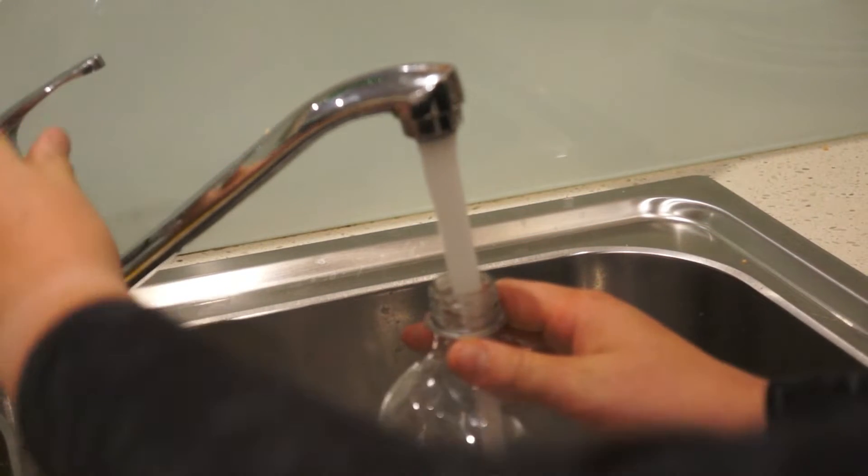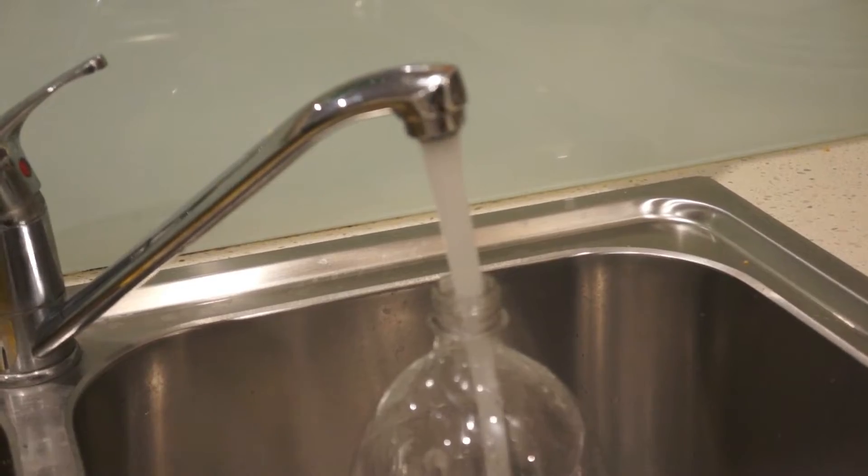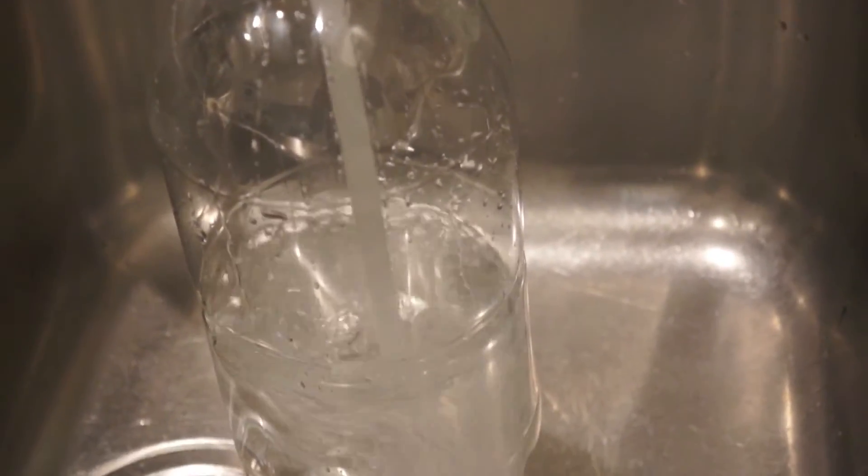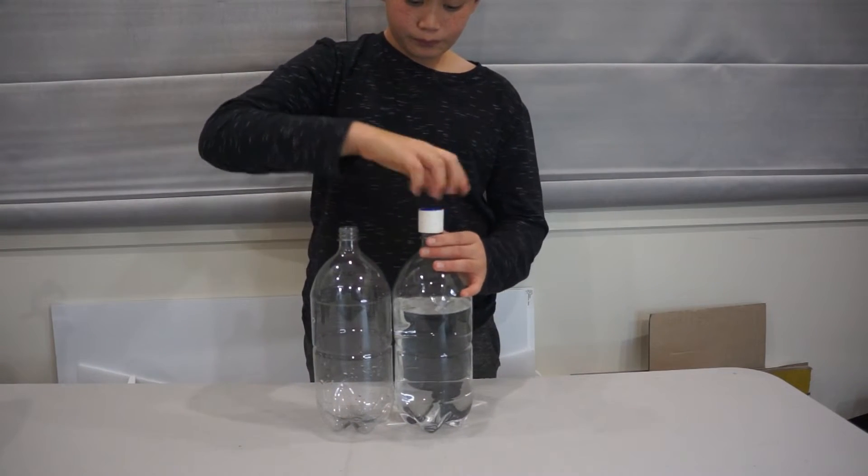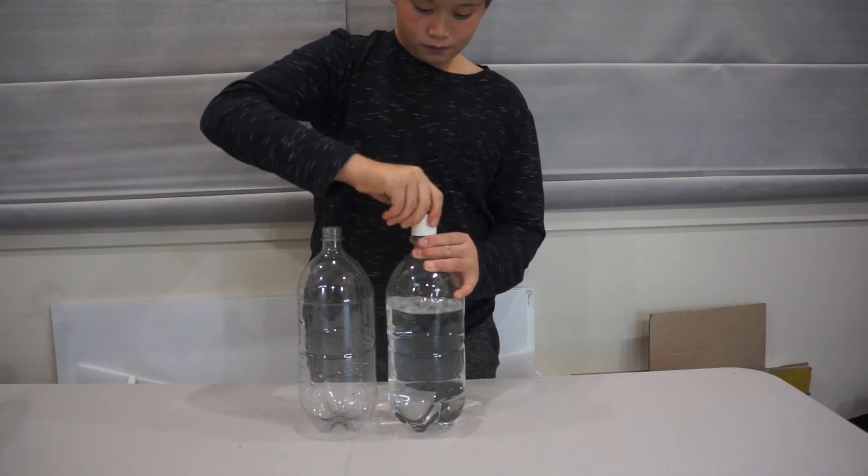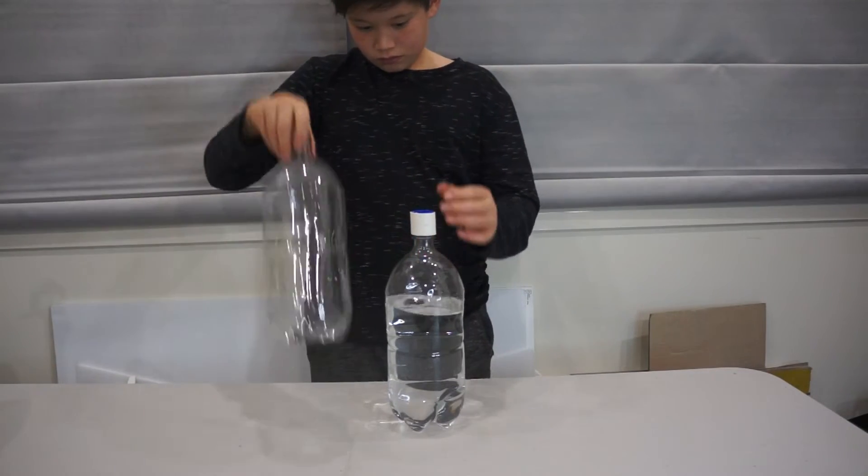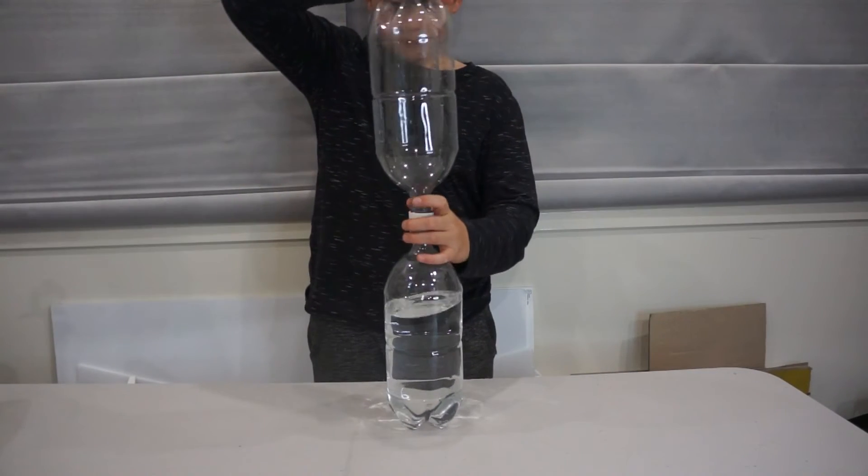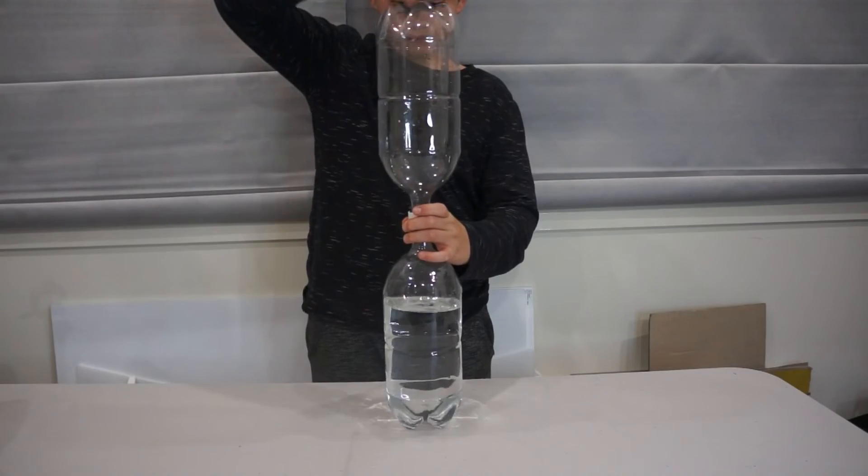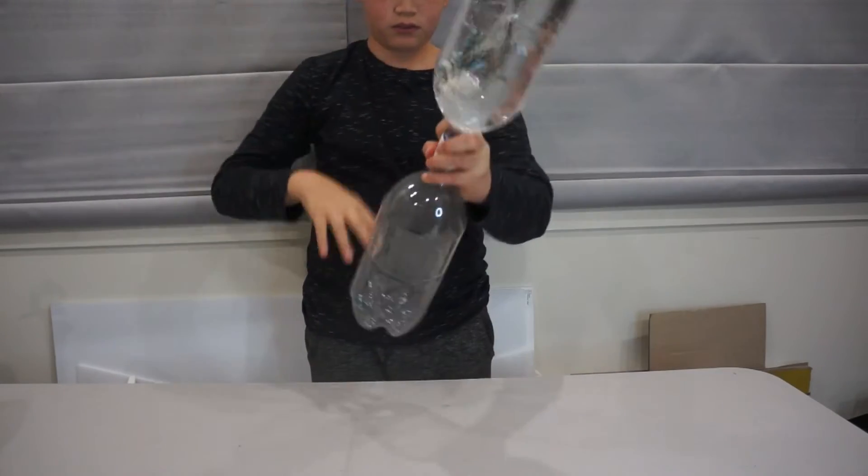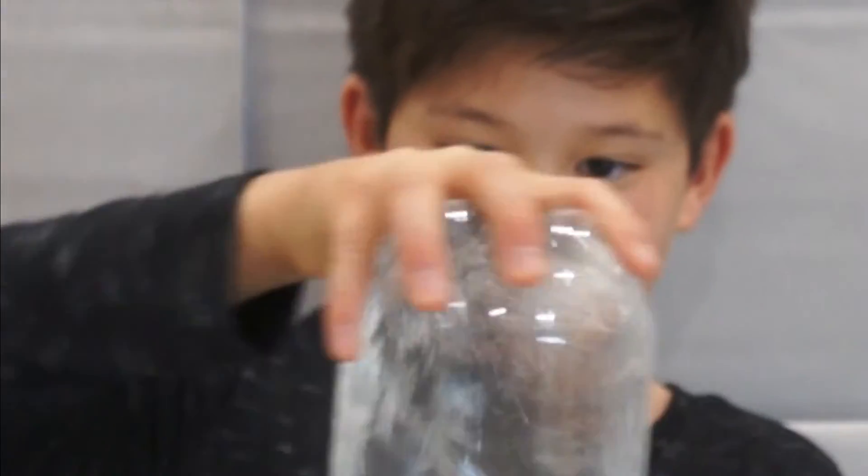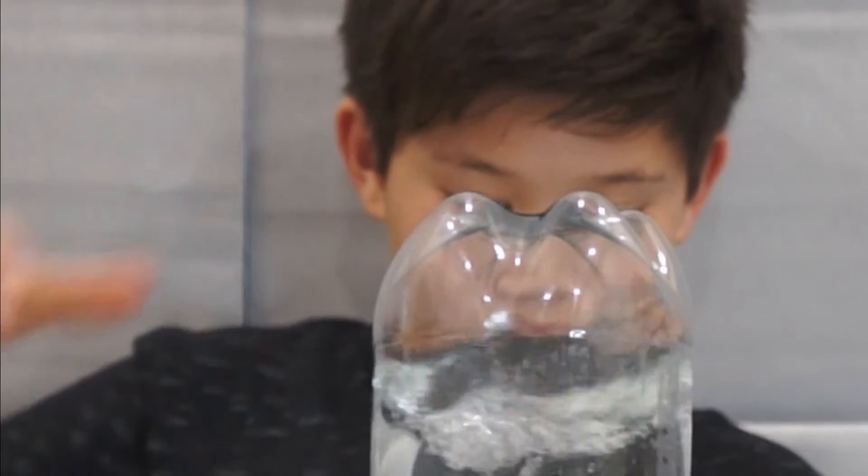To use the tornado tube, fill one bottle three quarters full of water. Then screw your tornado tube on. Get your second bottle and screw it on as well. Now tip the bottles over and swirl the top bottle in a circular motion like this.